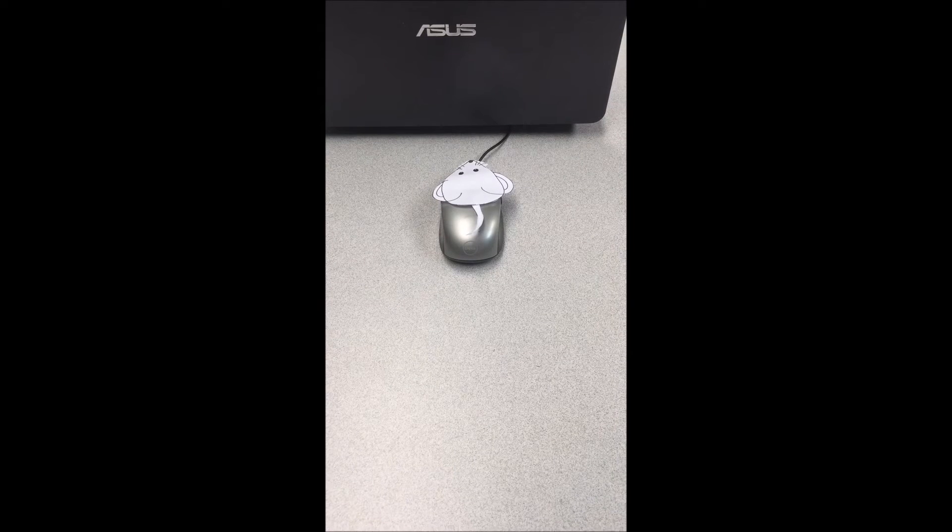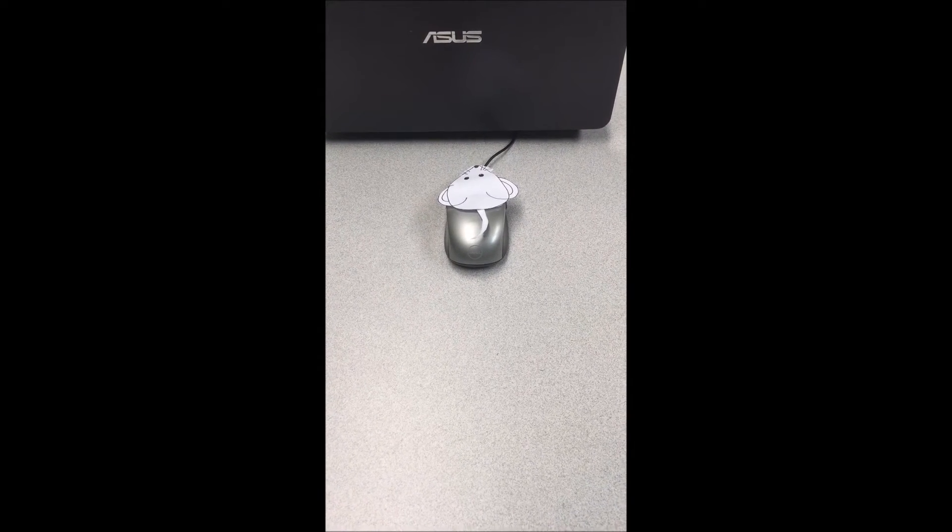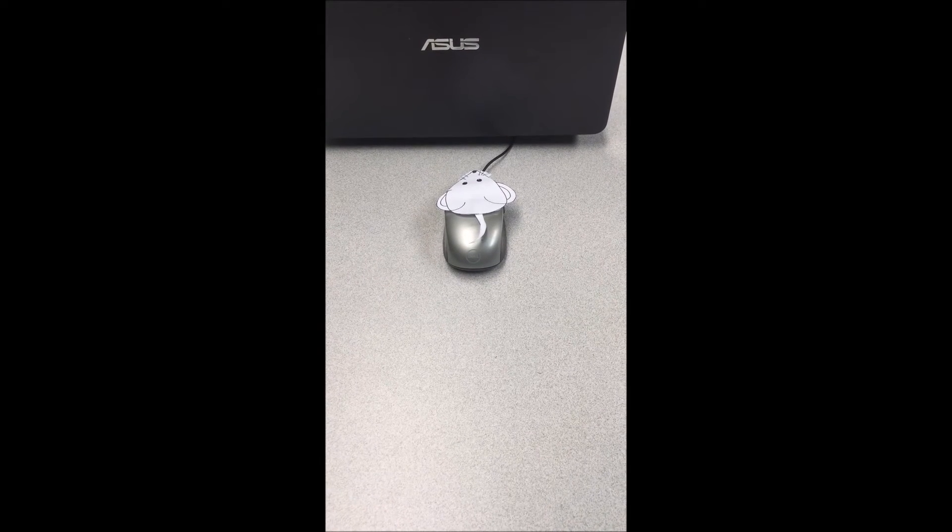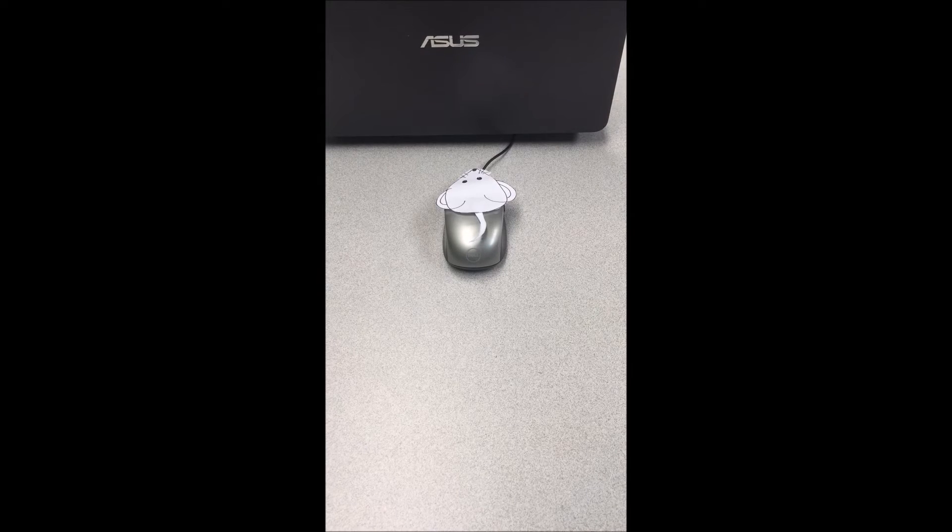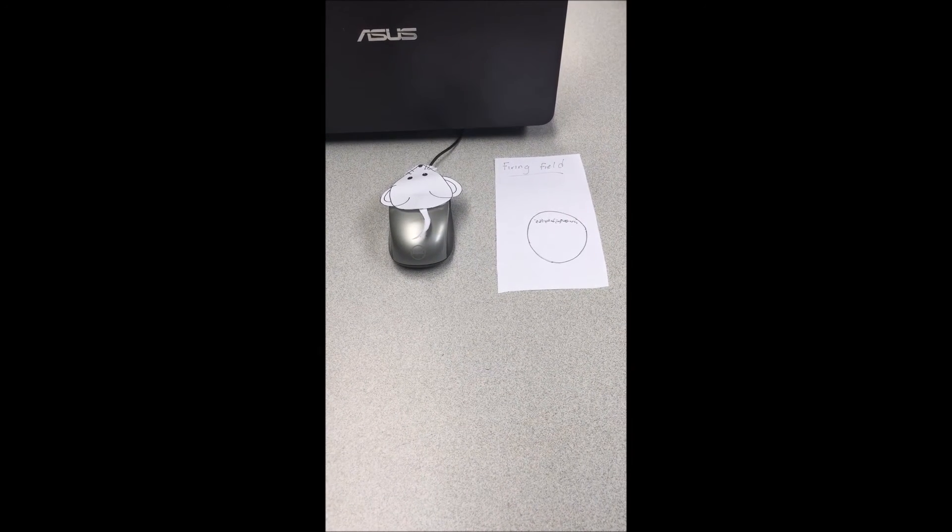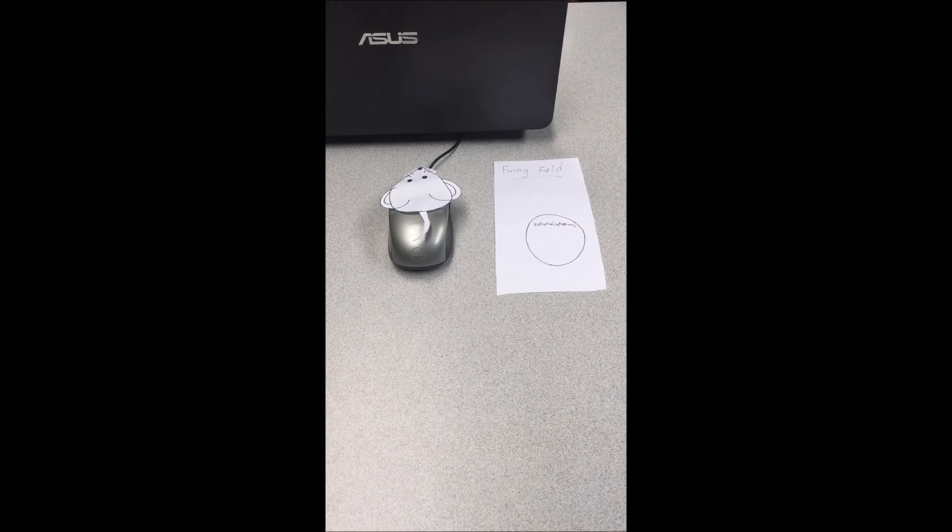Researchers defined border cells as cells with border scores above 0.5 in a scale of negative 1 to 1, meaning that the border cells' firing fields lined up with more than half of the length of the wall. As you can see here, this circle represents the firing field of the border cell, and the little dots represent neural activity in the orientation of the wall.